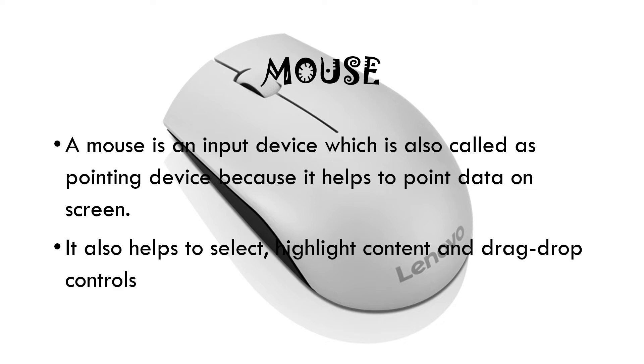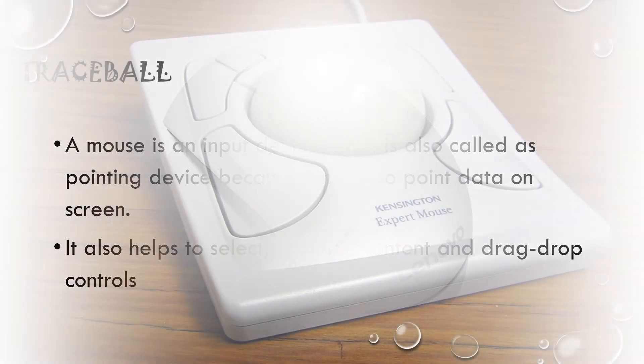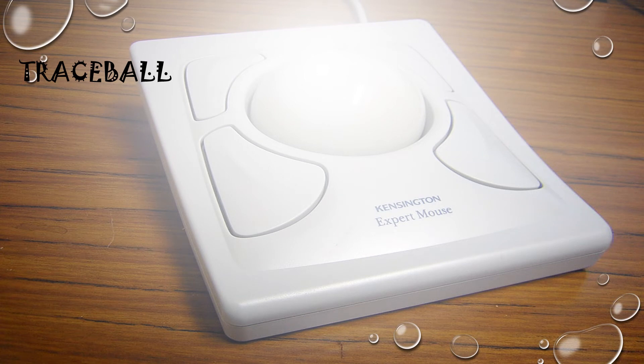The mouse is also important for graphical user interface because users can easily point to options and objects and click a mouse button. There are several types of mouse which we will look at in detail in another video. We also have the trackball, which is like a mouse lying on its back. To move the pointer, you rotate the ball with your thumb, fingers, or palm of your hand. It does not require much space.